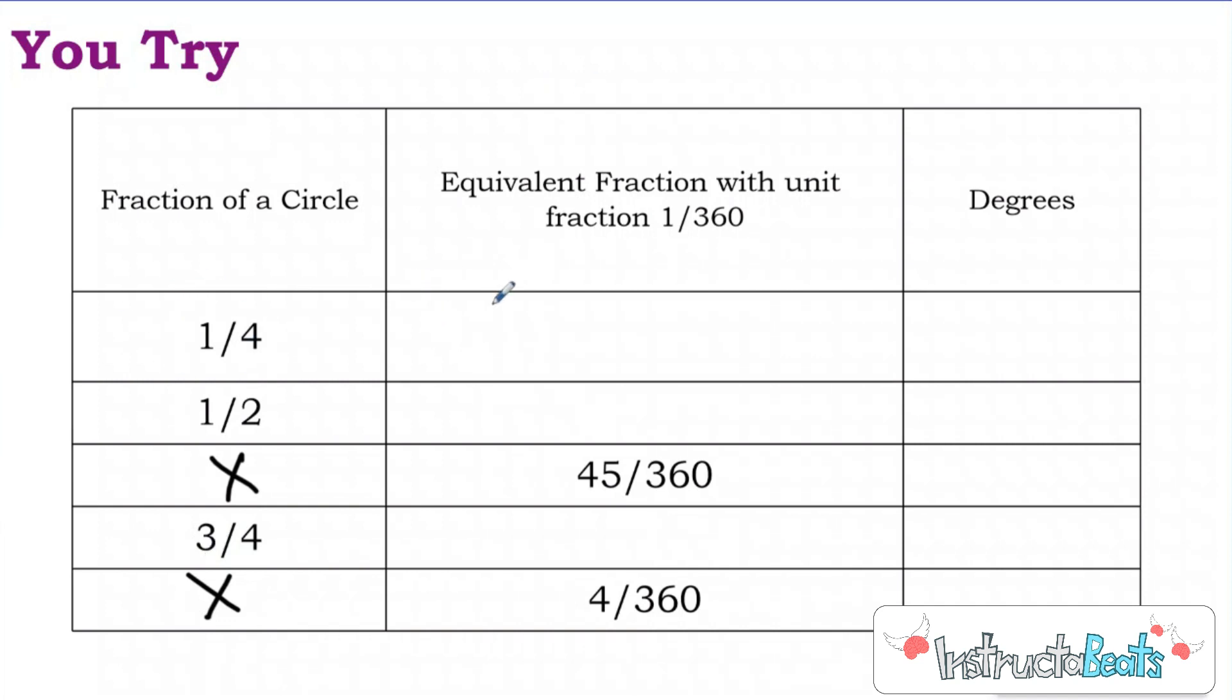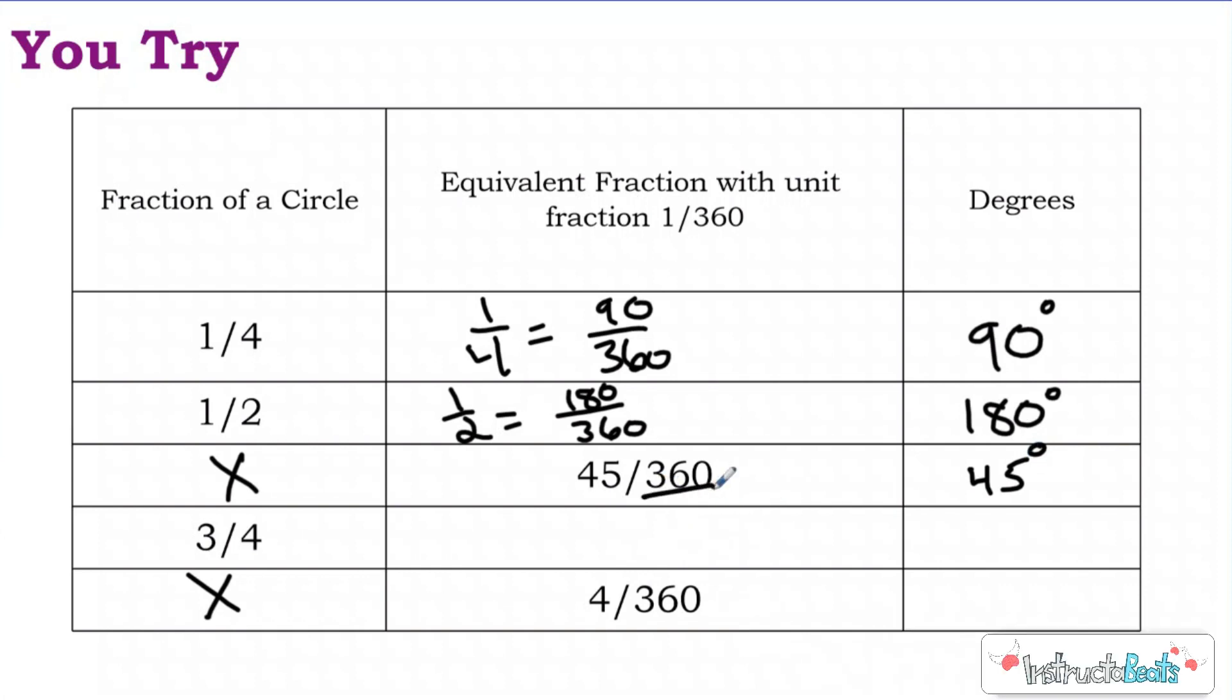So hopefully you just paused the video, you tried it. So one-fourth of that, one-fourth of a circle, if I made that denominator three-hundred-sixty, it would be equivalent to 90 three-hundred-sixtieth, which would be 90 degrees. So if you go one-fourth of a circle, you went 90 degrees. One-half of a circle, if I made that into a denominator of three-hundred-sixty, it would be 180, so that would be 180 degrees. So if you go half of a circle, you've turned 180 degrees. And then this obviously would be just 45 degrees since my denominator is already 360.